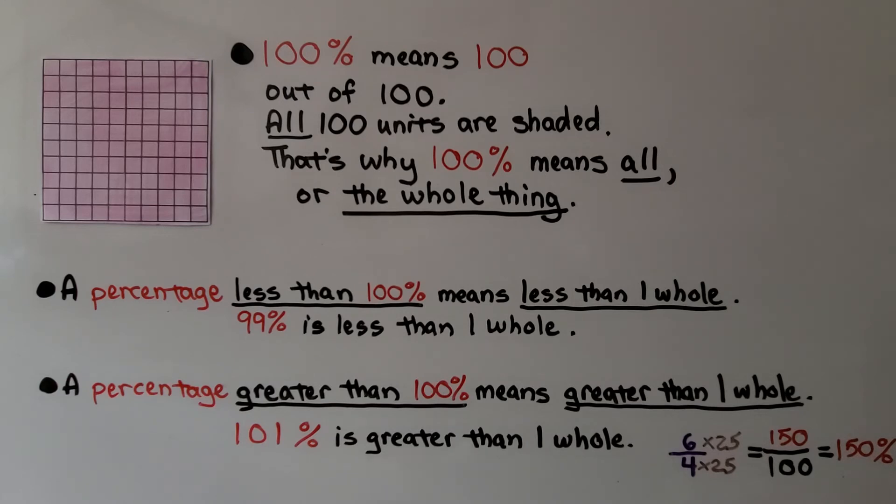So for greater than 100%, imagine we had a ratio of 6 to 4. We want to write an equivalent ratio that has 100 as the second term. So that means we need to multiply 4 times 25 to get 100. That means we need to multiply 6 times 25. That's going to give us a ratio of 150 to 100. That would be 150%. And we'll talk about that more in the other parts of this lesson.